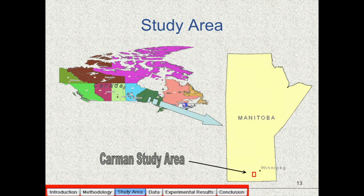Our study area is located in Carman, about 50 kilometers southwest of Winnipeg. It is an agricultural area, but soil moisture measurements have been carried out in bare fields in order to avoid the effect of vegetation in estimation of soil moisture.